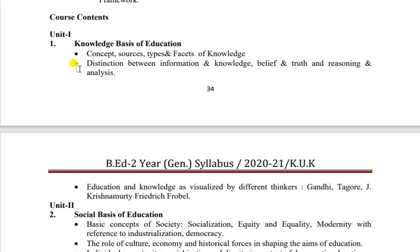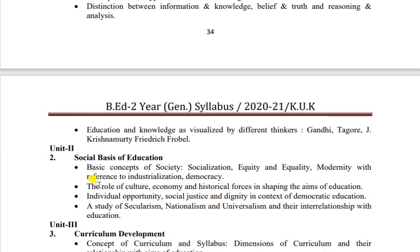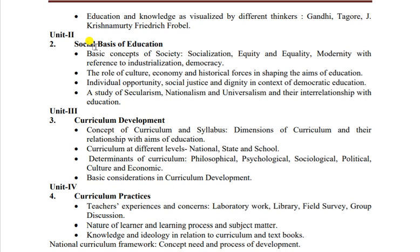Doosra question is unit se - bullet 2 aur 3 mein se ek pe question dekhne ko milega. Jaise education thinkers hain - Gandhi ji ke educational thoughts, Tagore ji ke, J. Krishnamurti, Friedrich Froebel - inme se kisi ek pe aapko educational thoughts likhne ko bula jaayega. 16 marks mein ek bullet pe question nahi aata toh 4 marks mein definitely dekhne ko milega. Difference between information and knowledge, belief and truth, reasoning and analysis - 16 marks mein prepare karein, dono aapko karne padengi - is subject mein skip karne wala content bahut kam hai.